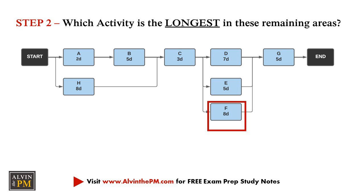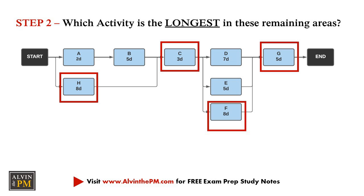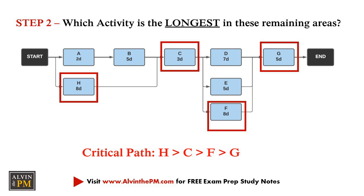Putting all this information together, we see that the critical path must be activities H, C, F, and G. And that's my simple but really effective two-step process to figure out the critical path on any question on your CAPM and PMP exam.